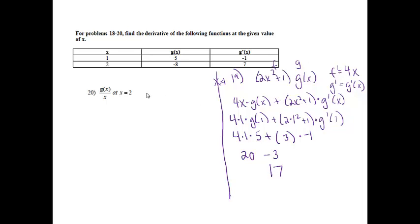And then number 20 says g of x over x, so I notice that I see a quotient, so I do need to use the quotient rule. So here's f, here's g. f prime will equal the derivative of g of x, which will be g prime of x. And then g prime, the derivative of x will be 1.